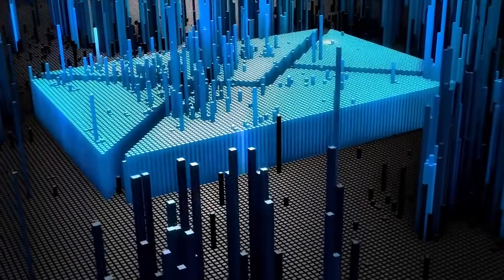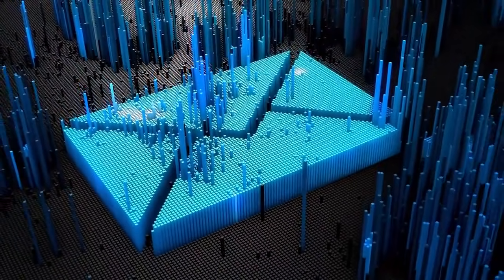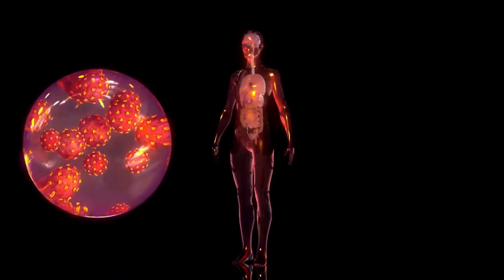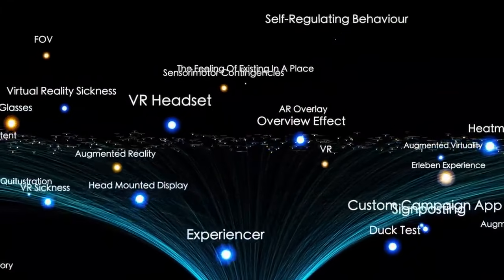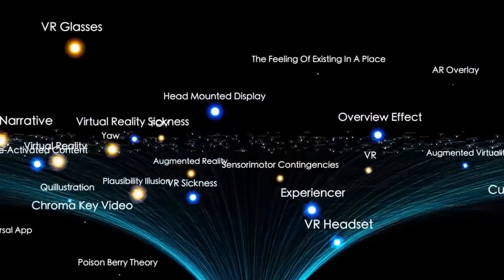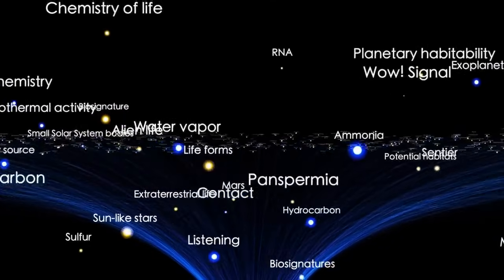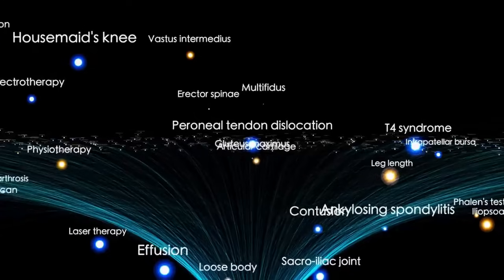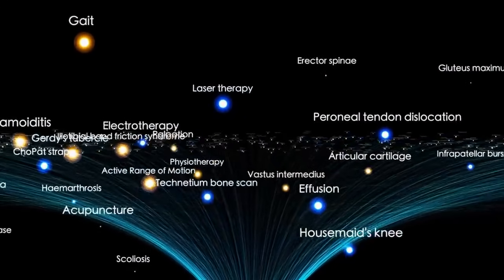The observable universe refers to the portion of the cosmos that we are capable of observing and studying using telescopes and other scientific instruments. However, this observational capability is inherently limited due to the finite speed at which light travels. Since light is our primary source of information about the universe, we can only detect objects and events that are within a certain distance from us. Consequently, we are unable to directly observe occurrences or celestial bodies that took place or formed very early in the universe's history, billions of years ago.